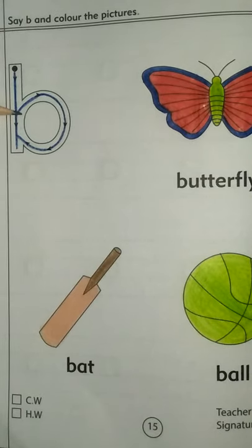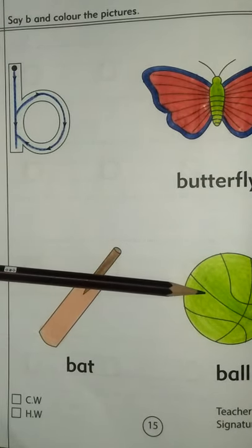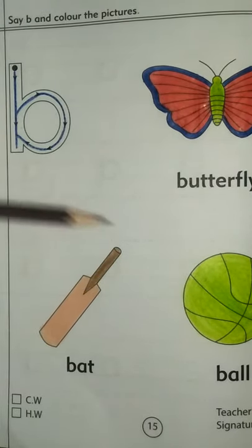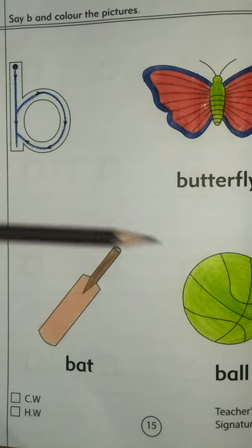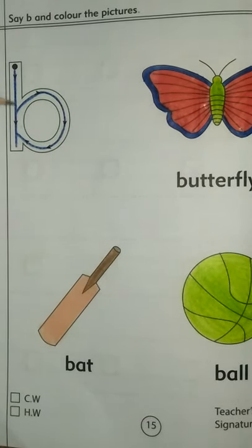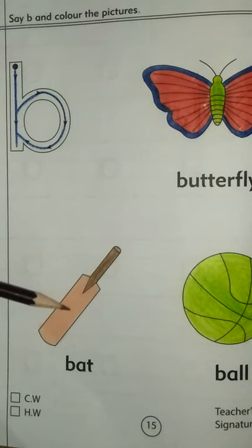Very good. B is for ball. Very good. B is for bat.